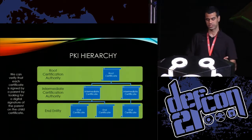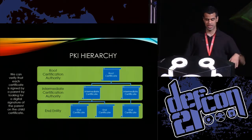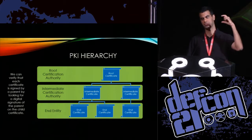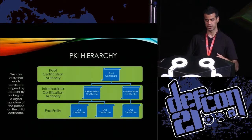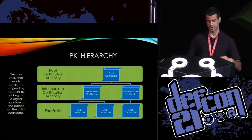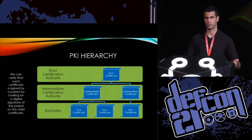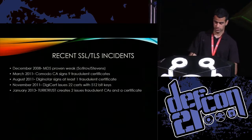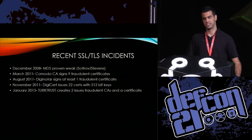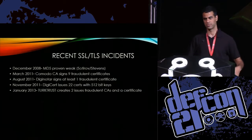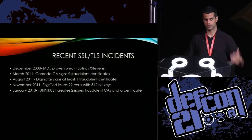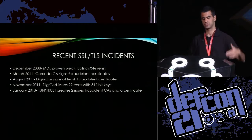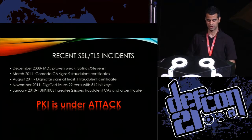Here's what PKI looks like: at the root you have the root certificate, which signs certificates below it. The root certificate signs the intermediate certificates, which in turn sign the end certificates. The end certificate would be whichever site you're logging into over HTTPS. It's basically a chain of trust rooted by the root. There have been recent TLS and SSL incidents: back in 2008, Sotirov and Stevens proved MD5 was harmful; in 2011 we saw three different CA attacks with fraudulent certificates issued; and in January of this year TurkTrust was compromised. In a nutshell, PKI is under attack.